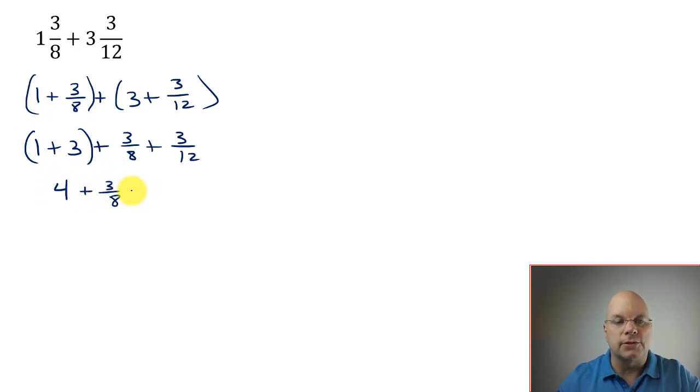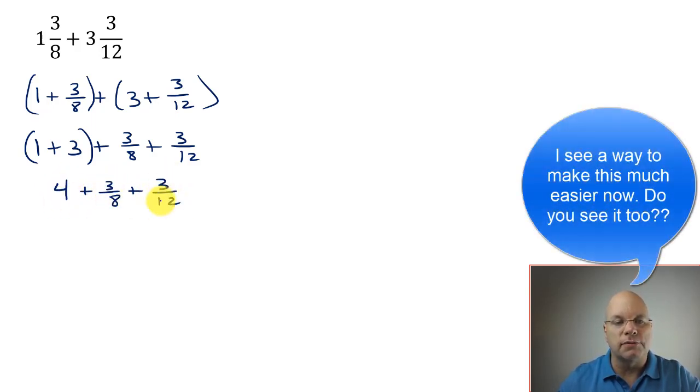But we have unlike terms now in all of our terms. Here I'm counting wholes. Here I'm counting eighths. And here I'm counting twelfths. So we need to turn the eighths and the twelfths into something that they have in common. And so we start with the twelfths. Twelfths can become twenty-fourths. And twenty-fourths multiple of eights. So eighths can also become twenty-fourths.